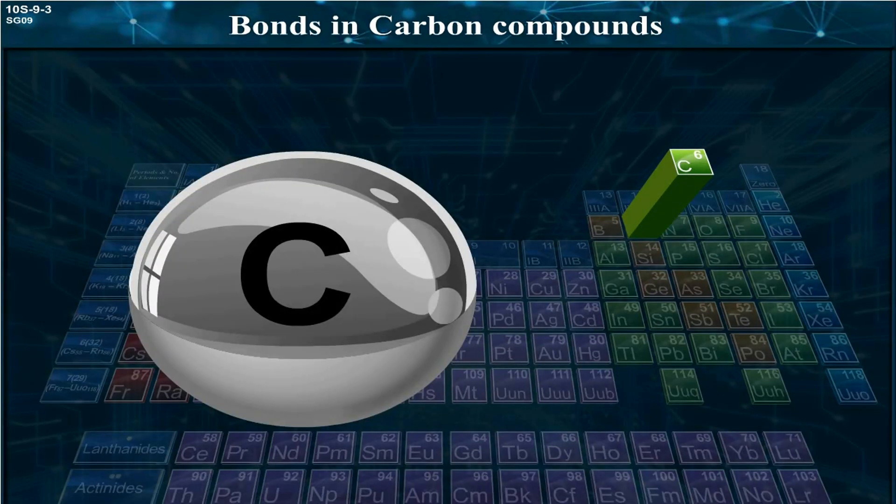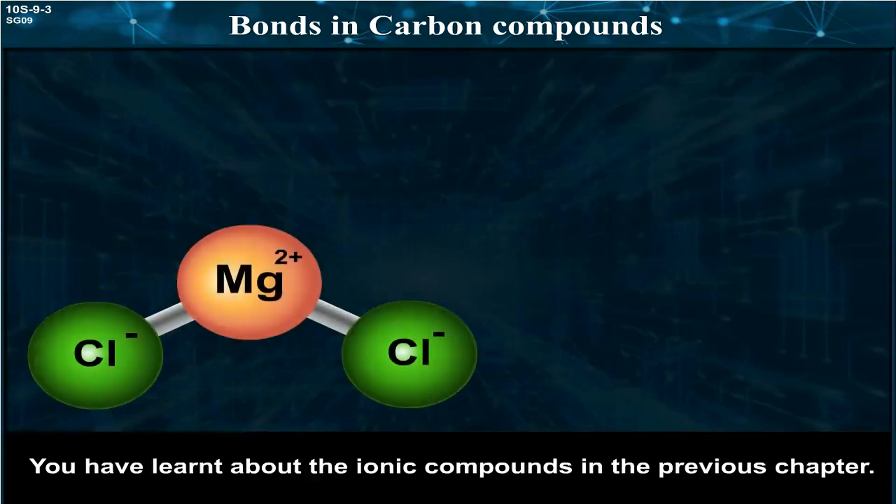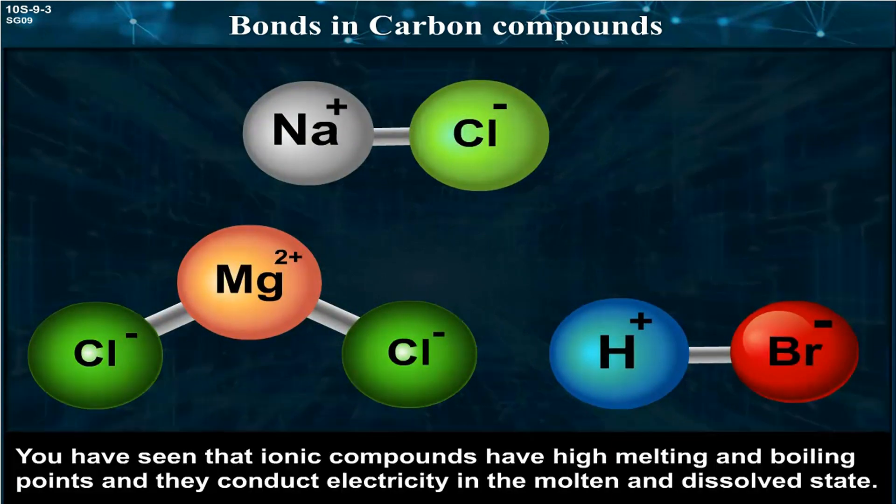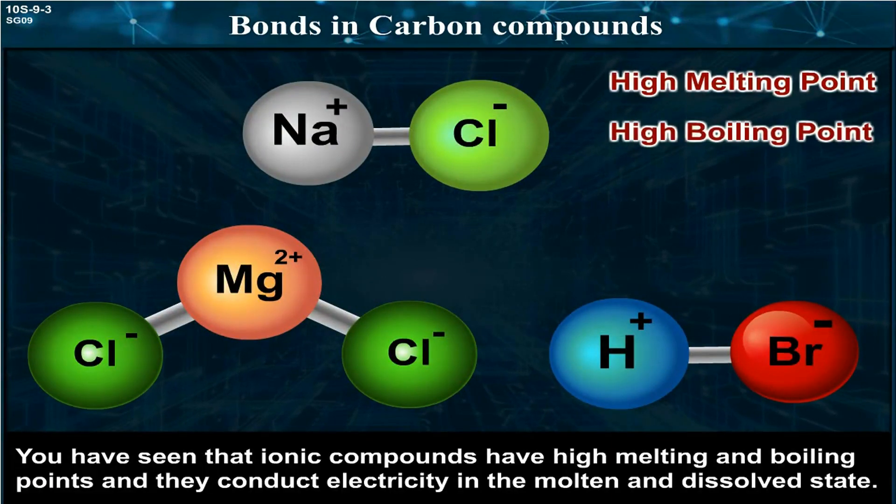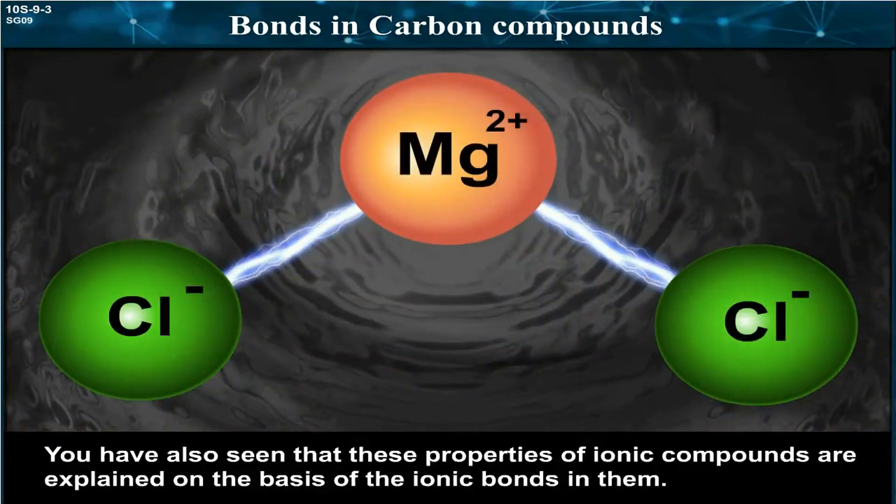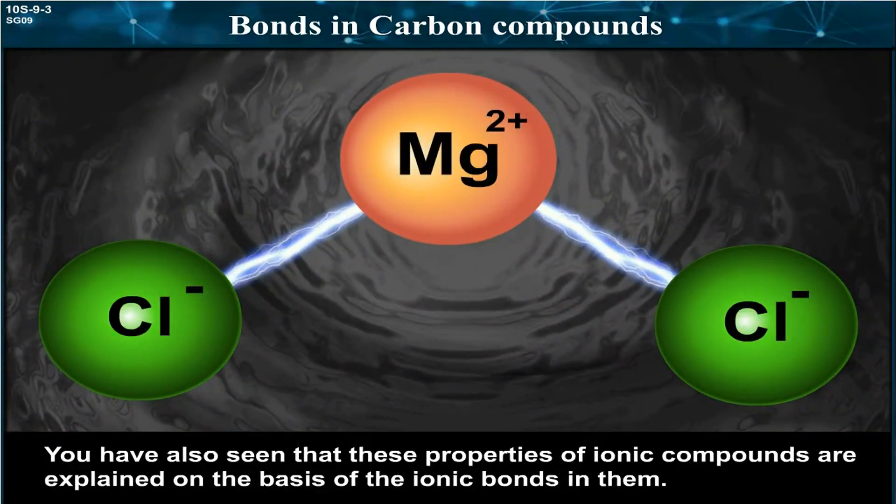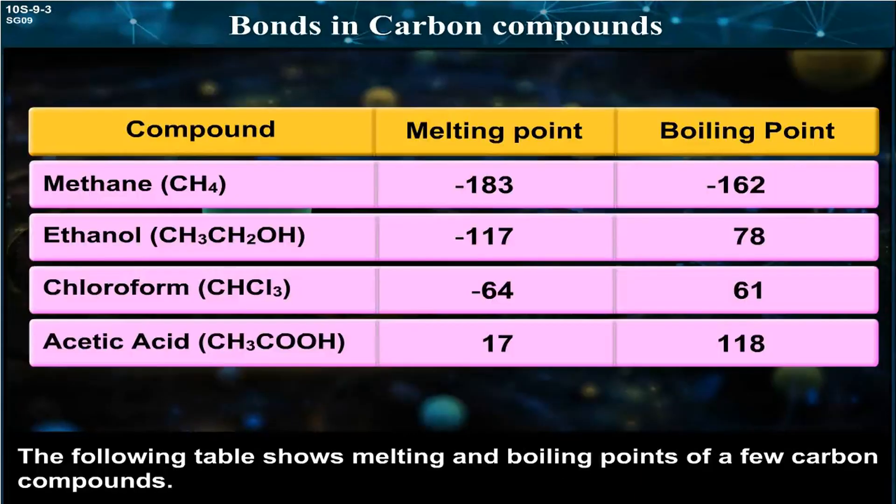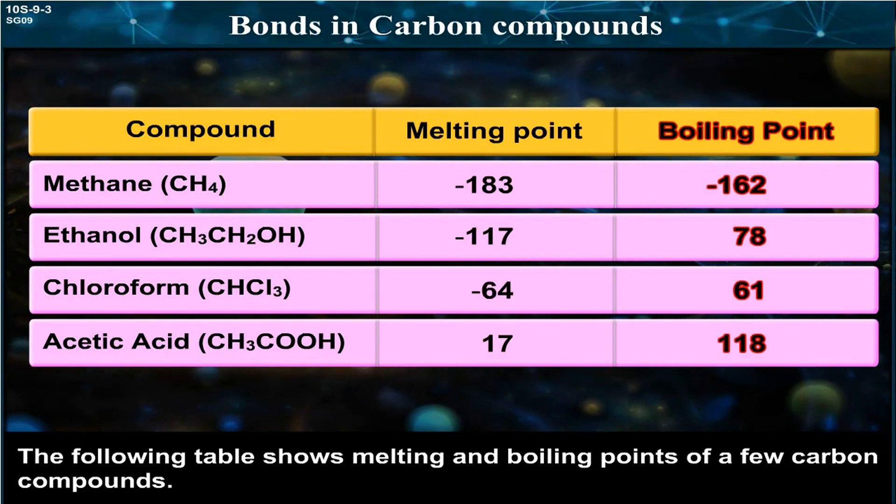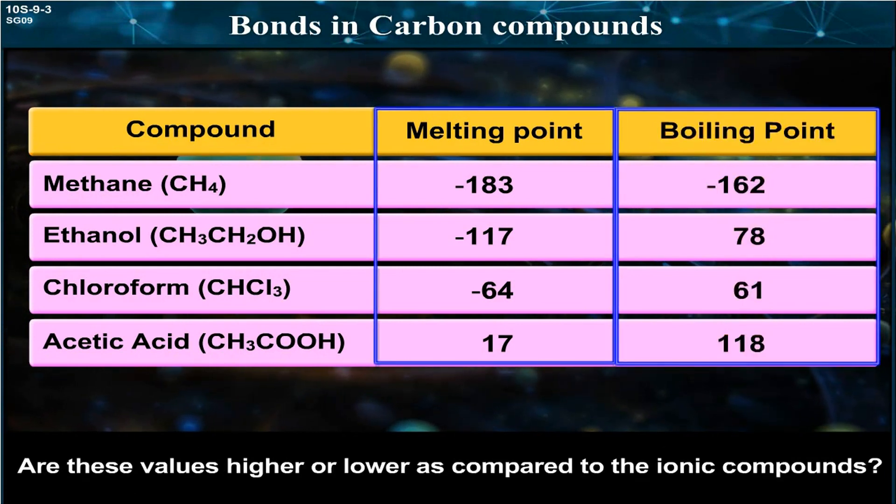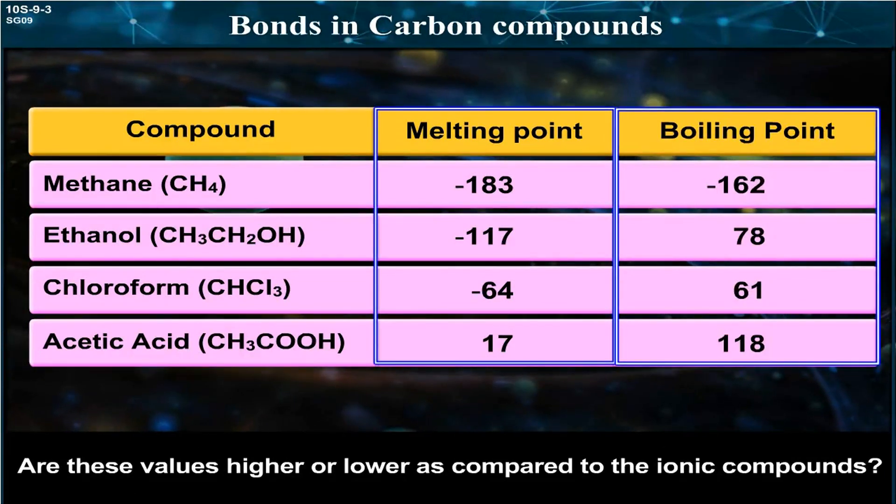Bonds in Carbon Compounds. You have learned about the ionic compounds in the previous chapter. You have seen that ionic compounds have high melting and boiling points and they conduct electricity in the molten and dissolved state. The following table shows melting and boiling points of a few carbon compounds. Are these values higher or lower as compared to the ionic compounds?